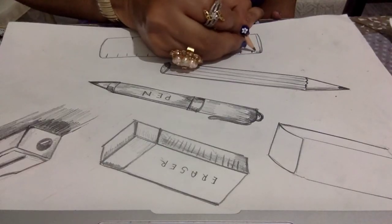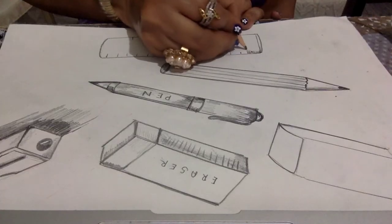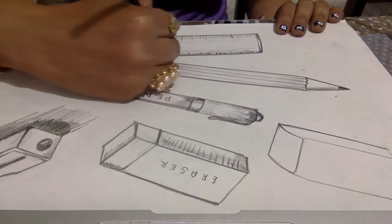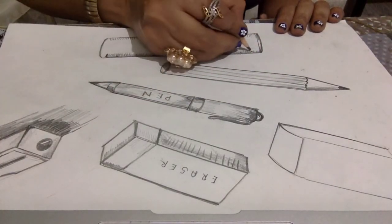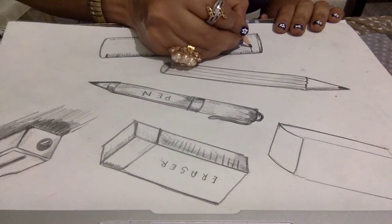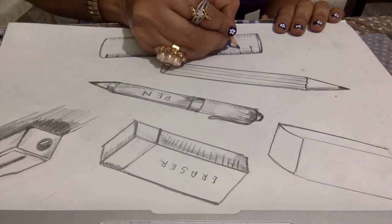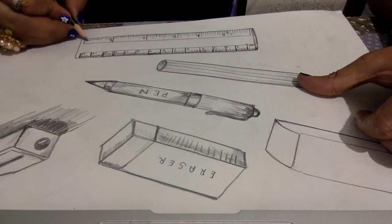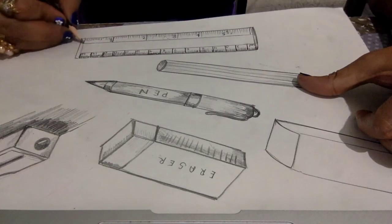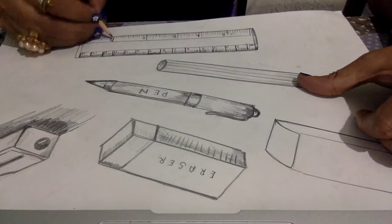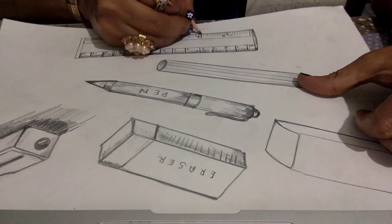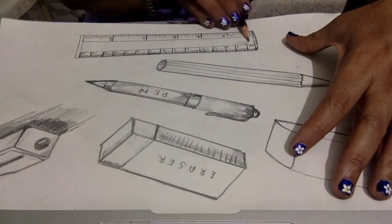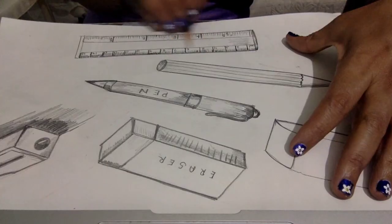Follow the design of the scale. Give some small lines so it can indicate the half centimeter and full centimeter. Mark one, two, three, four to give the proper shape of the scale. Give some shading and the scale is ready.